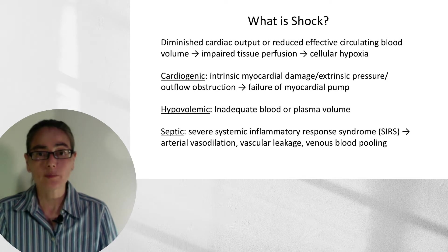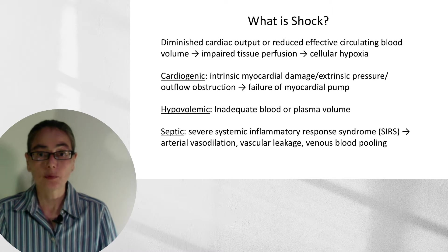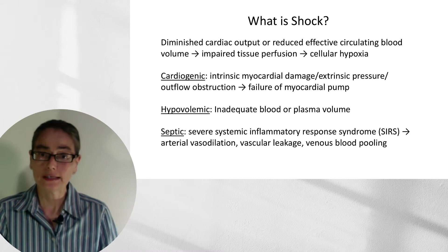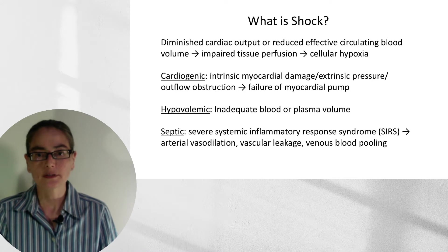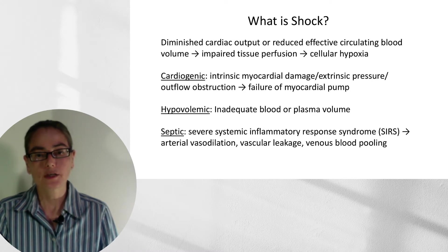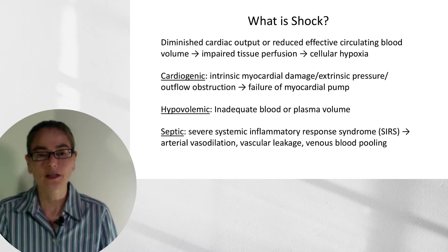Cardiogenic shock causes failure of the myocardial pump, impaired tissue perfusion, and cellular hypoxia. Hypovolemic shock occurs when you have inadequate blood or plasma volume, leading to impaired tissue perfusion and cellular hypoxia. Septic shock involves severe systemic inflammatory response syndrome, or SIRS, leading to arterial vasodilation, vascular leakage, and venous blood pooling, causing impaired tissue perfusion and cellular hypoxia.